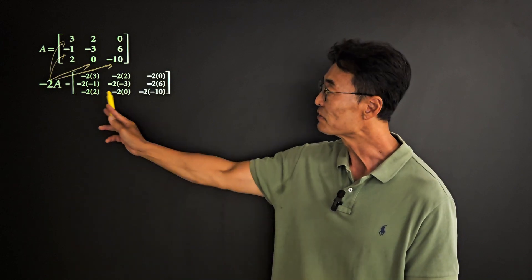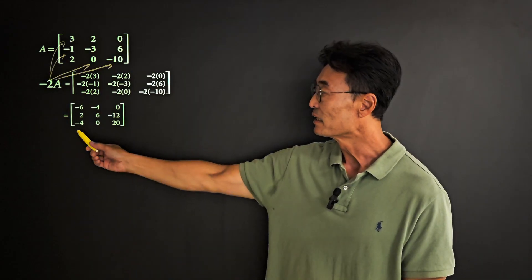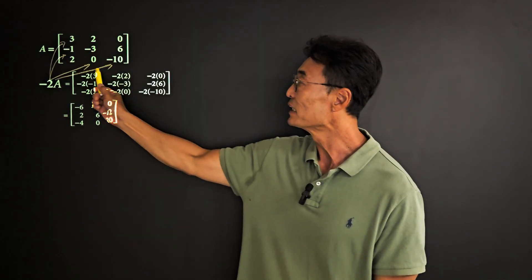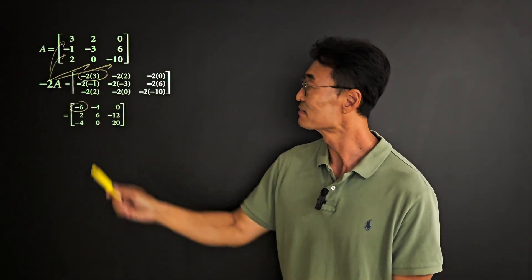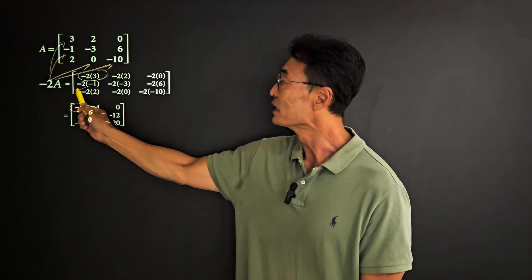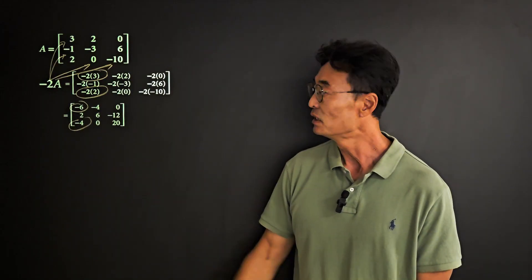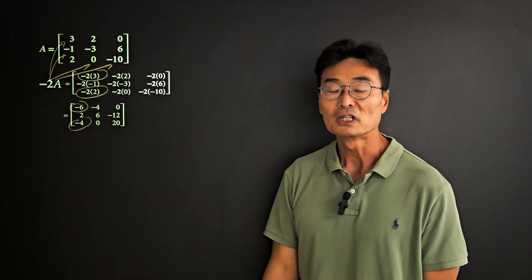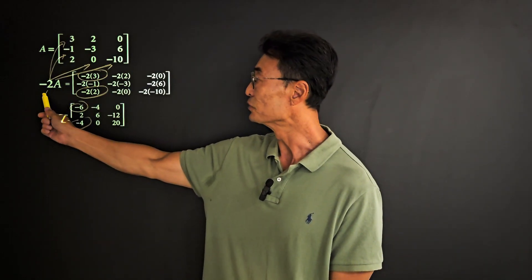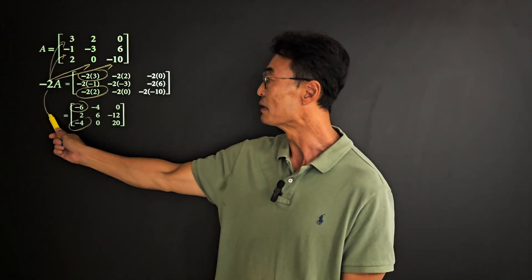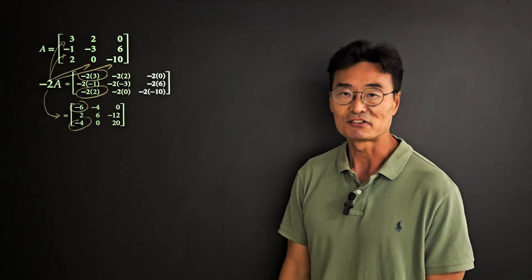If we simplify this, we end up getting: negative 2 times 3 gives us negative 6, negative 2 times 2 gives us negative 4, and the same goes for each and every number. Therefore, if we do negative 2 times A, this will be the answer.